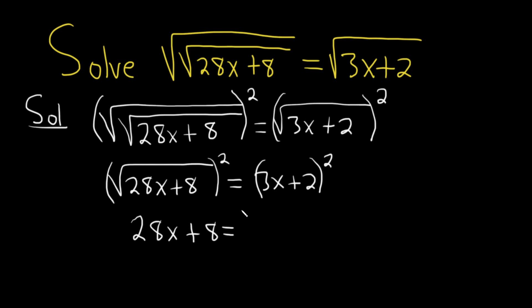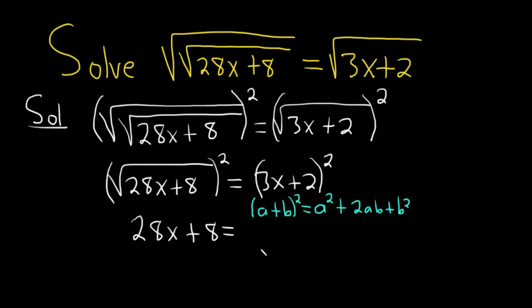For this part I'm going to use a formula. You could multiply it out the long way using FOIL, but the formula says if you have (a + b) squared, you square the first term, plus 2ab, plus you square the last term. So squaring 3x gives 9x squared, and then 2 times 3x times 2 gives 12x.